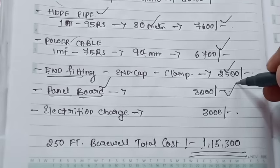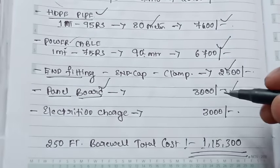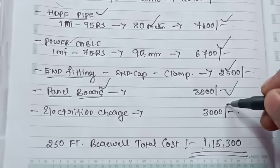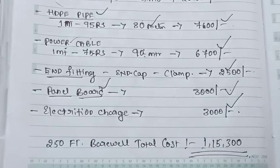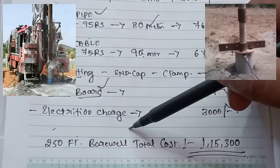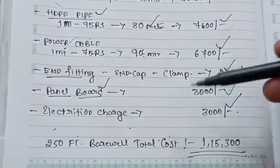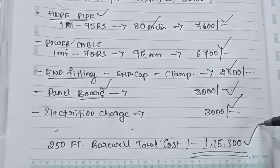Next are the electric charges. If you have a minimum of 2,500 rupees, the charges will be about 3,000 rupees. Overall, the total for 250 feet borewell is 1,15,500 rupees.